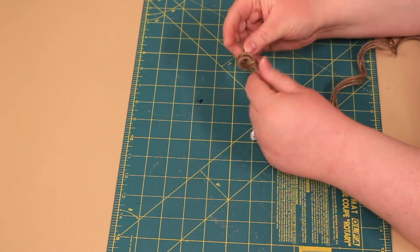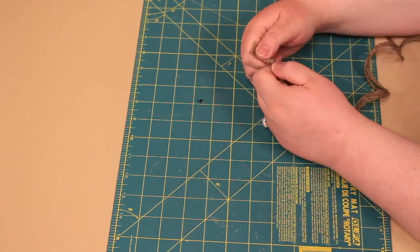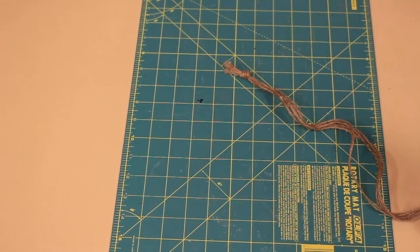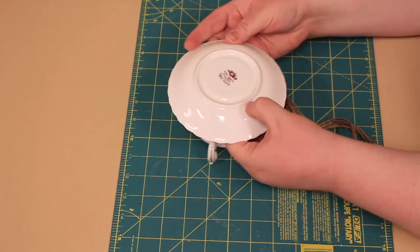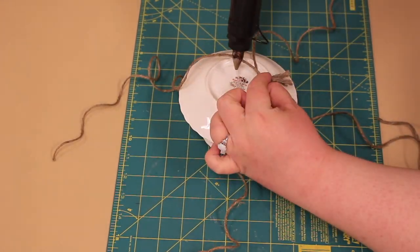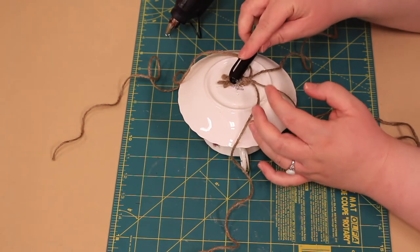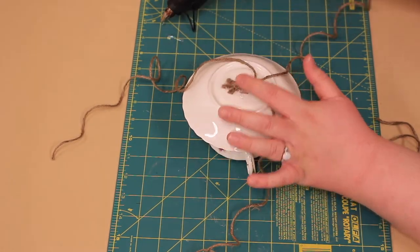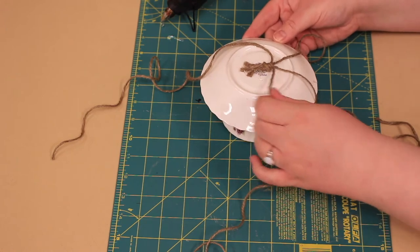Next, knot all four strands together near one end. Make sure the knot is extra tight. Then, glue the knot onto the bottom of the saucer, right in the middle. Since I am using hot glue, I am using a marker to help press the twine into the glue.